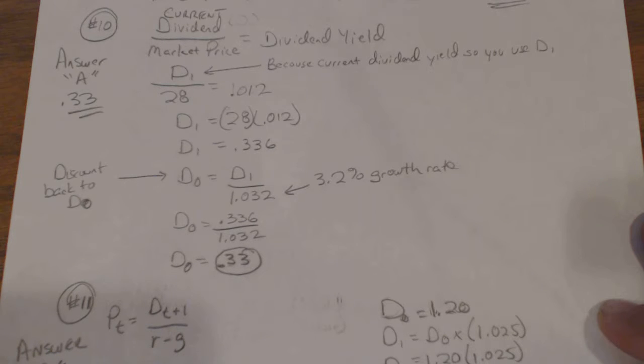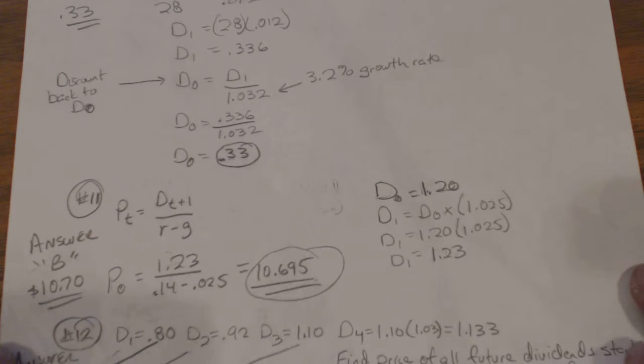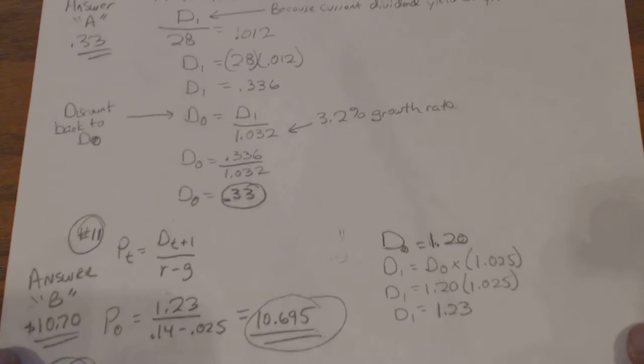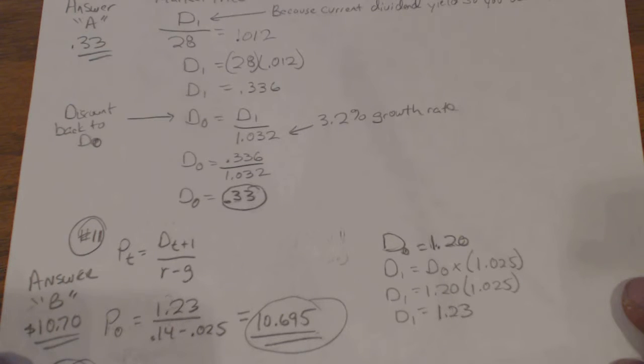Problem number 11: Dixie Hardware paid a dividend, that's D0, of a buck 20 last year and has a policy of increasing its dividend by 2.5 percent annually. How much are you willing to pay to purchase one share of stock considering that you require a 14 percent return? It's pretty straightforward. Remember the formula: Pt equals Dt+1 over r minus g.